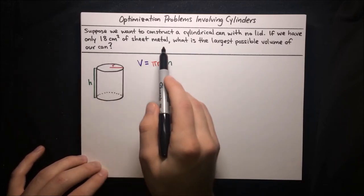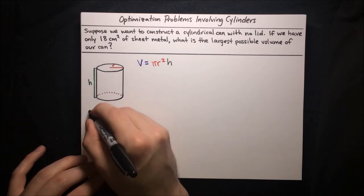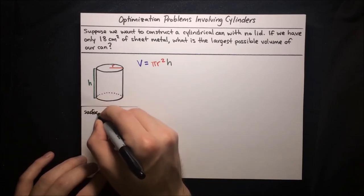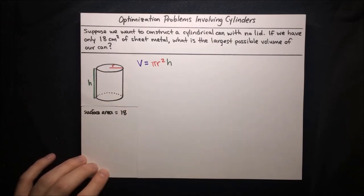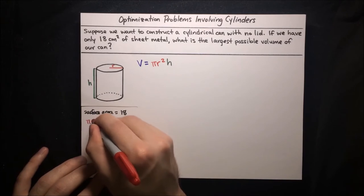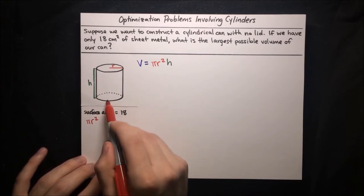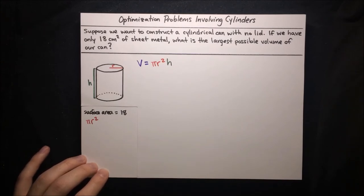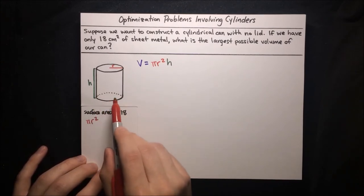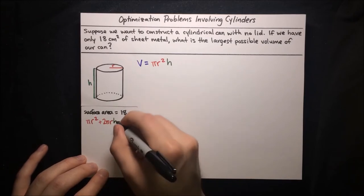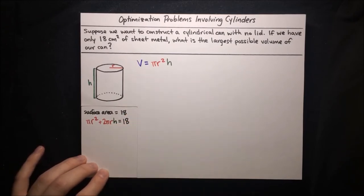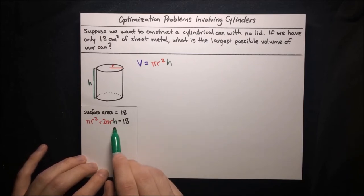We know that we only have 18 square centimeters of sheet metal, so that's telling us something about the surface area. The surface area is equal to 18. The surface area is the base area, which is pi r squared — just a single base, the bottom base, because it has no lid — and then plus the lateral area, which is the circumference of the base times the height, so plus 2 pi r times h. That's got to be equal to 18.